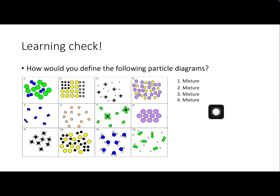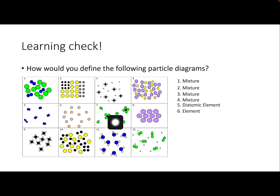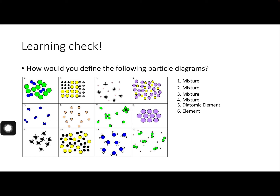Number five: all the dots are the same color, so it's an element, and they come in pairs — so it's a diatomic element. Number six: all the dots are the same color, so it is an element. Number seven has a green circle with a white circle attached, but also a black circle with four green circles attached — these are not the same structures, so that is a mixture. Number eight: all circles are the same color, so eight is an element.